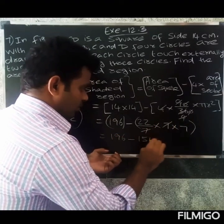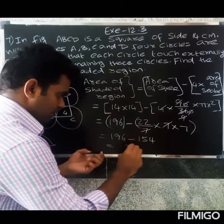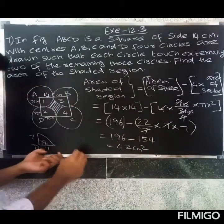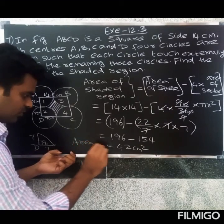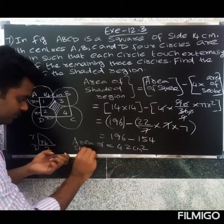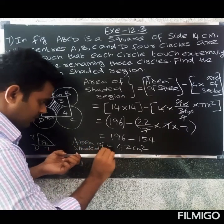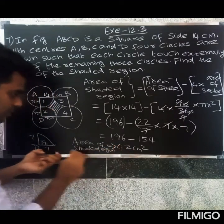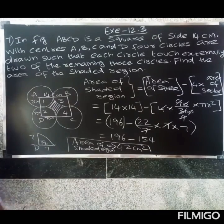So 196 minus 22 × 7 = 196 minus 154 = 42 cm². The area of the shaded region is 42 square centimeters. Thank you.